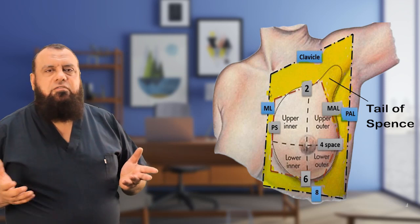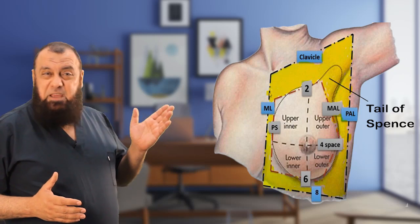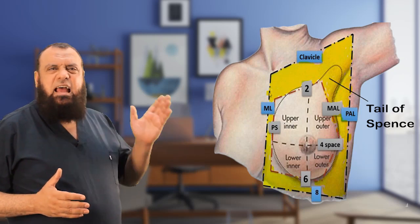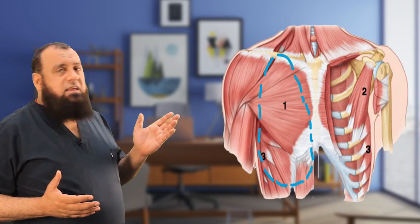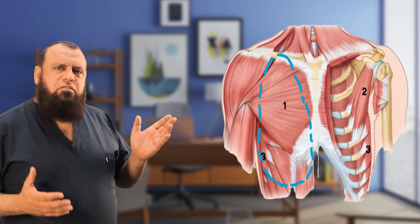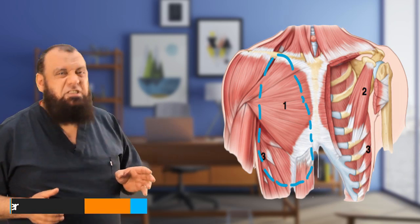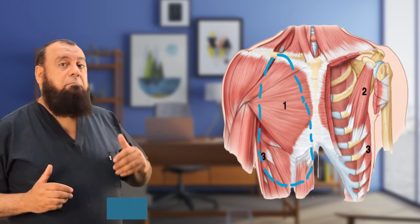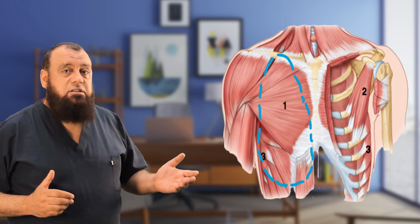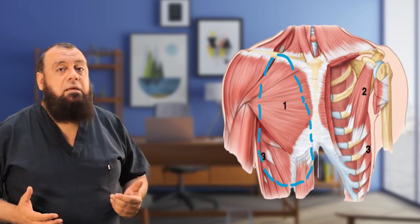The nipple is located in the fourth intercostal space at the mid-clavicular line. Regarding deep relations: the upper two-thirds of the breast lies over the pectoralis major, separated from it by the pectoral fascia. In the lower third, medially there is the anterior rectus sheath, and laterally the serratus anterior and external oblique muscles.